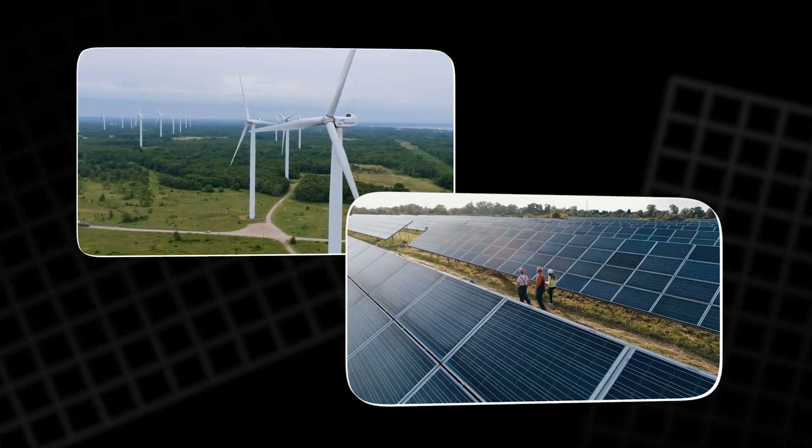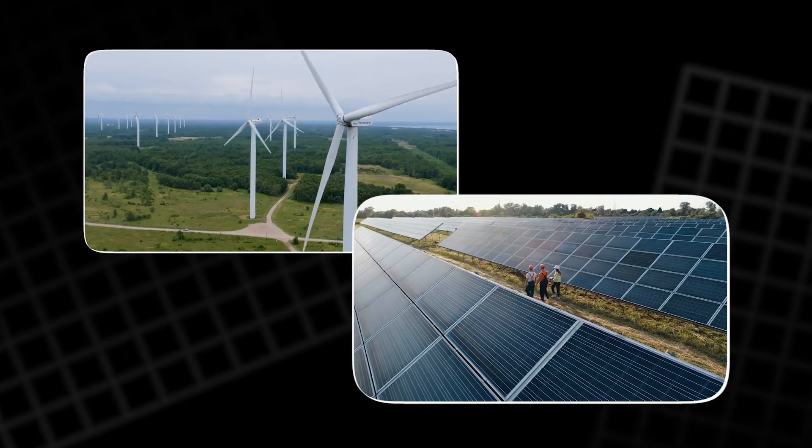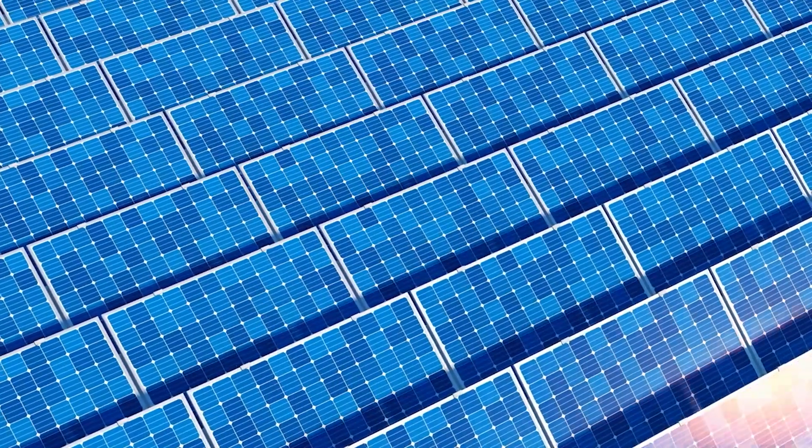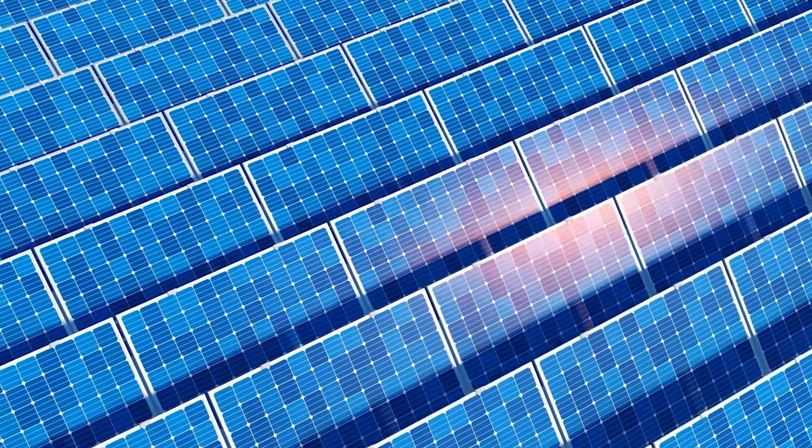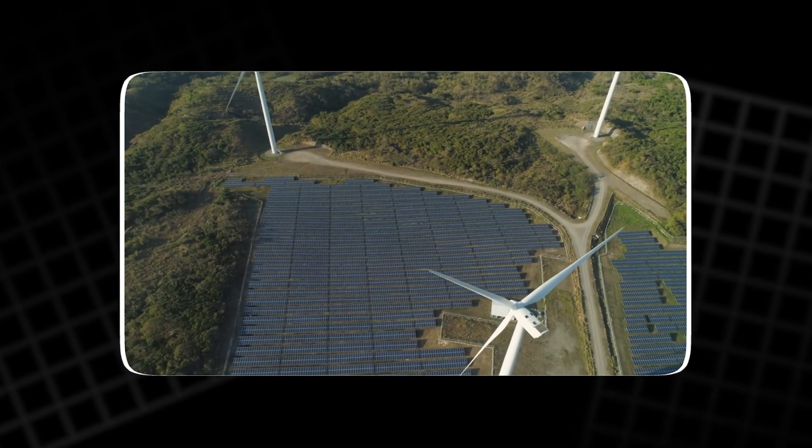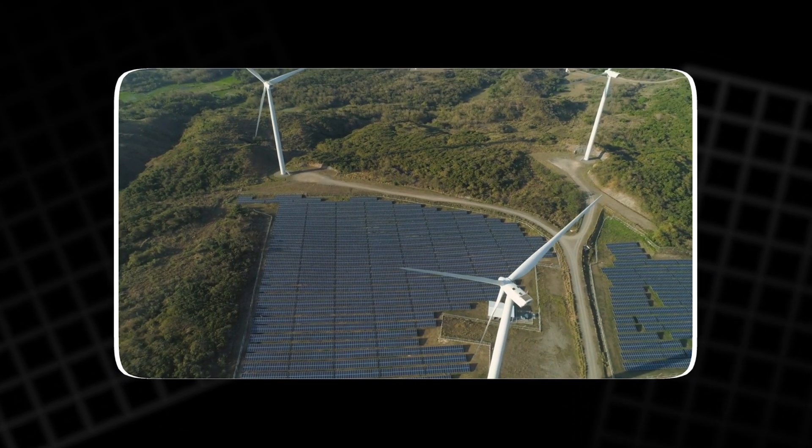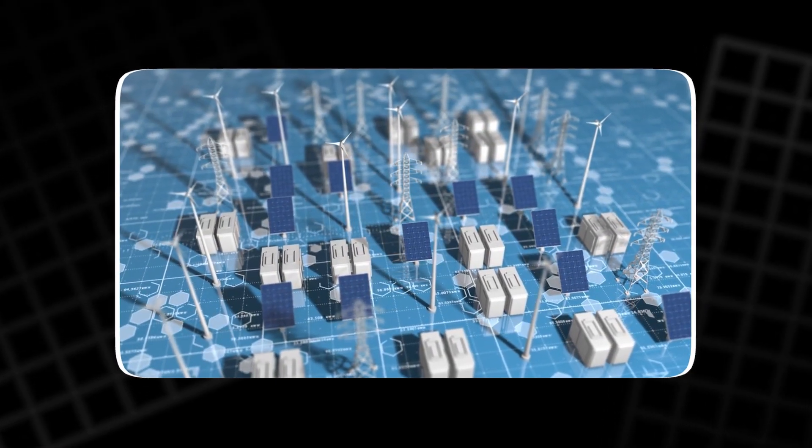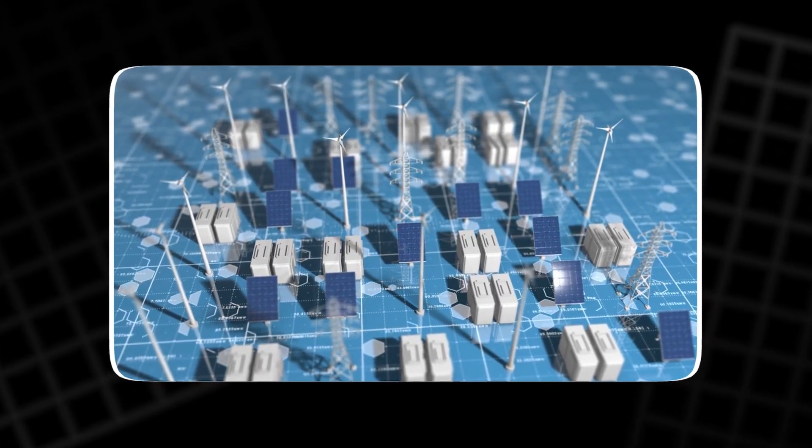In contrast, renewable energy sources like solar and wind produce power in a very different manner. Solar panels generate power through photovoltaic cells that convert sunlight directly into electrical energy. Wind turbines rely on the movement of air to turn blades and generate electricity. The output from these sources is much more variable and dependent on factors like sunlight and wind speed.